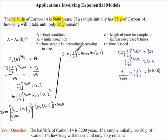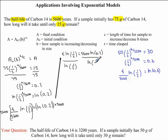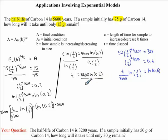Now we need to get rid of ln of one-half. The operation is multiplication, so we divide both sides by ln of one-half. These divide out to 1, so we're left with T equals 5,600 times ln of 0.2, all divided by ln of one-half.